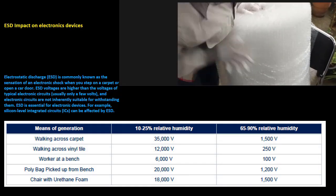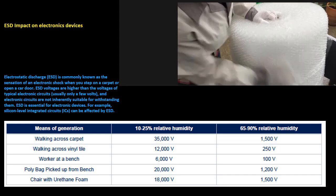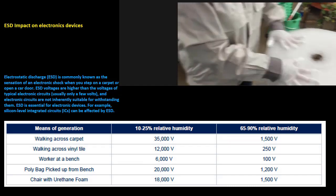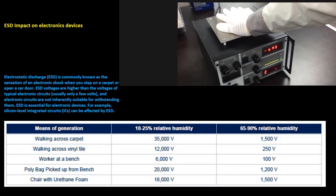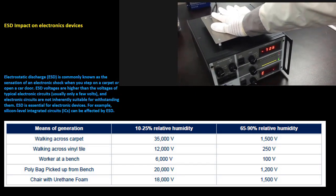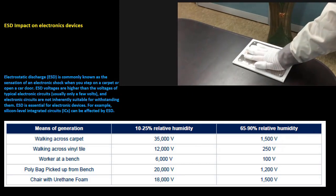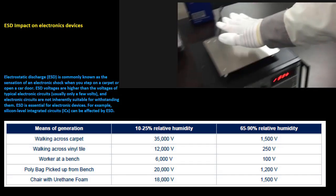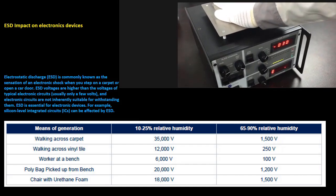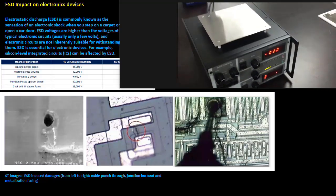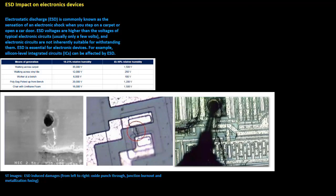Electrostatic discharge is commonly known as the sensation of an electronic shock when you step on a carpet or open a car door. ESD voltages are higher than the voltages of typical electronic circuits, and electronic circuits are not inherently suitable for withstanding them. ESD is critical for electronic devices. For example, integrated circuits can be affected at silicon level by ESD.